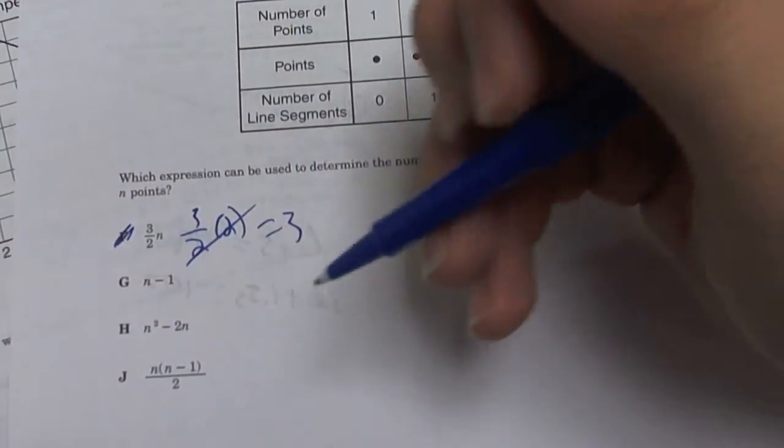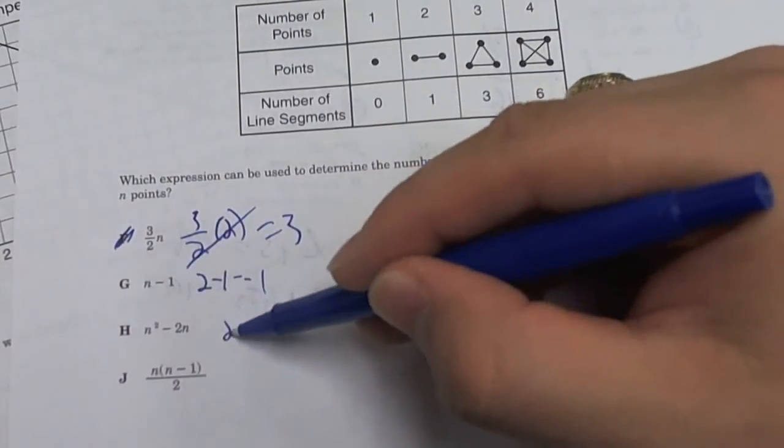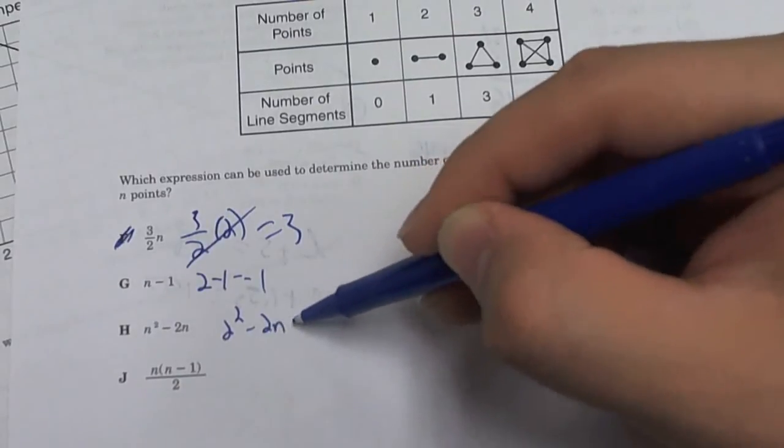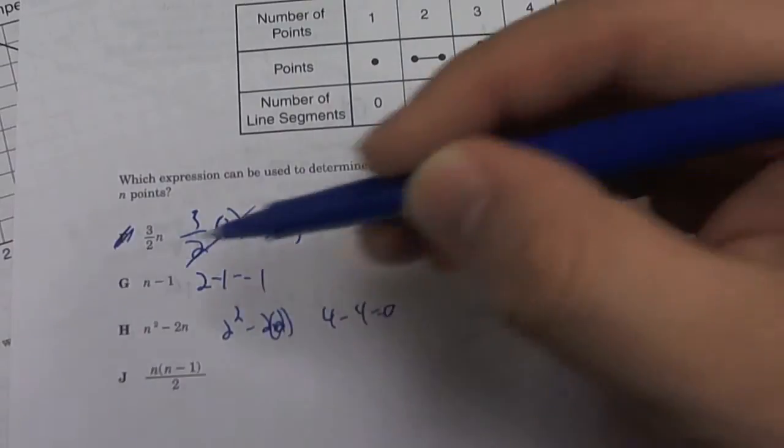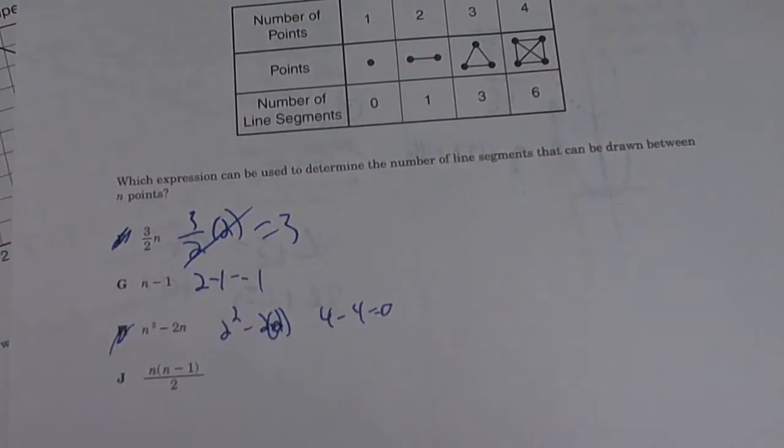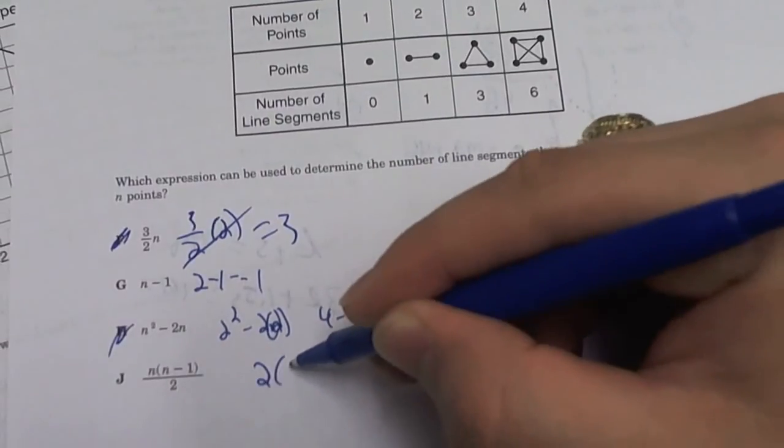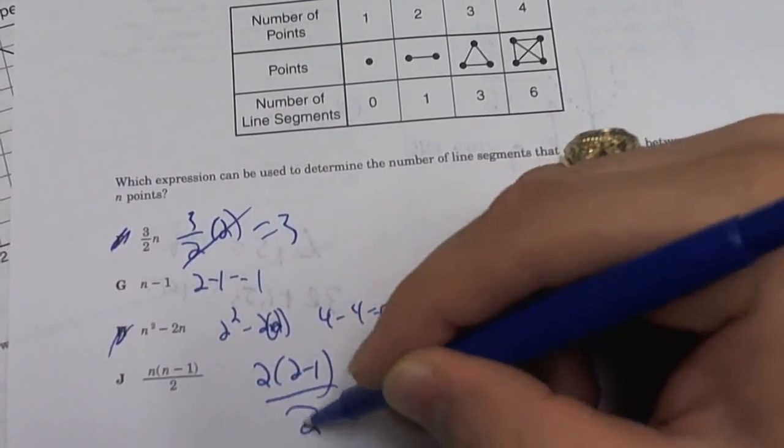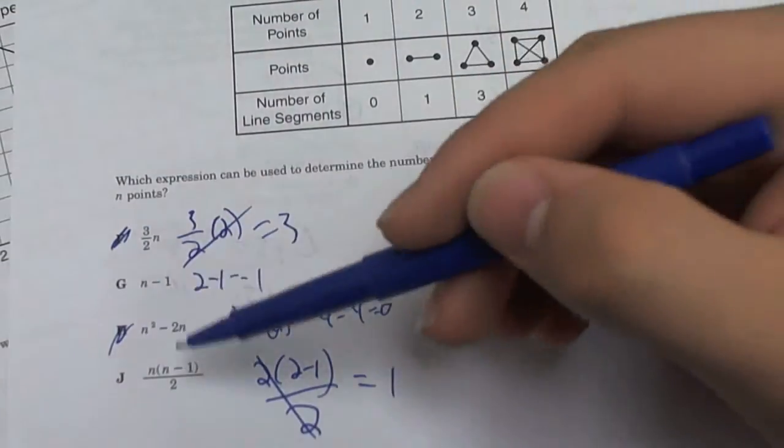n minus 1. 2 minus 1 is 1. So that's right. H, 2 squared minus 2n times 2. So that's 4 minus 4 which is 0 which is not that. Next one is J. 2 times 2 minus 1 divided by 2. 2's cancel, you get 1. So you're left with G and J.